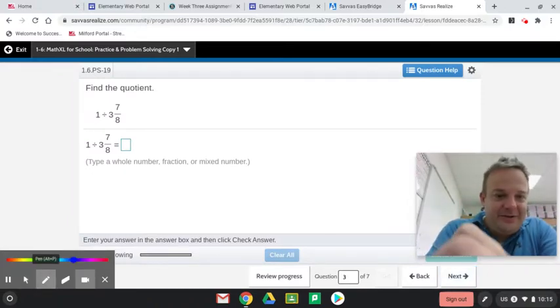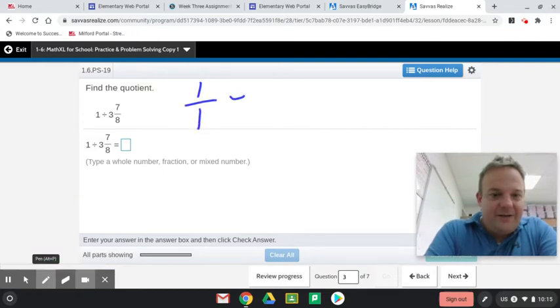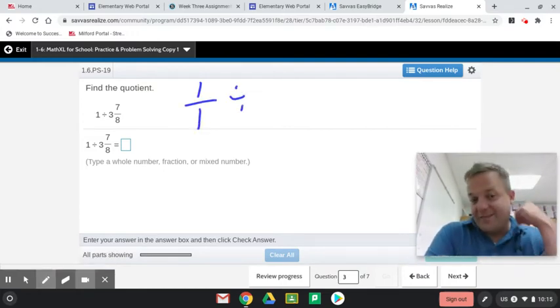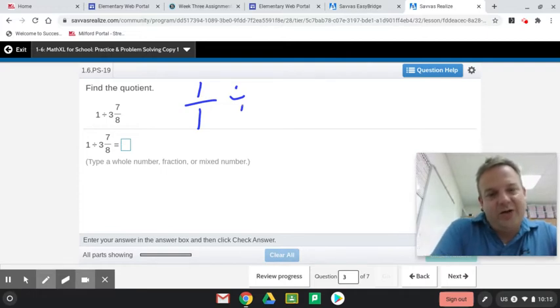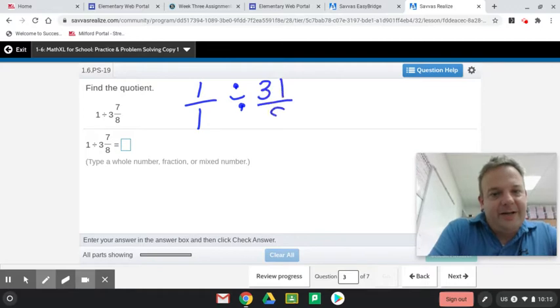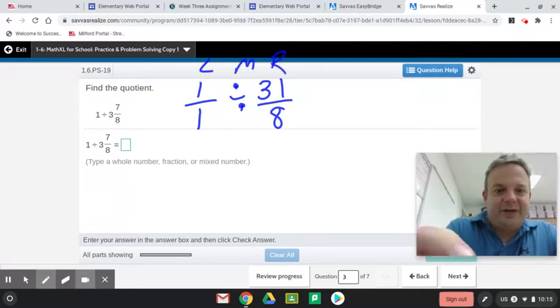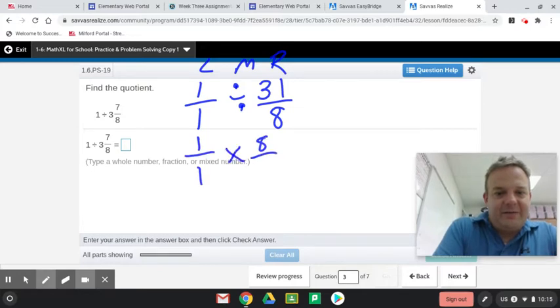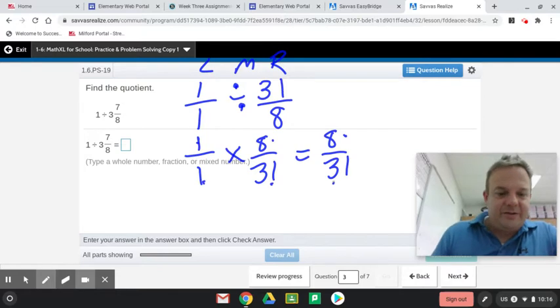Let's do this one. So 1 over 1 divided by, and I'm going to convert that to an improper fraction. 8 times 3 is 24, plus 7. 24 plus 7 is 31. Now, left side leave it, middle multiply, right side reciprocate. And we have 1 over 1 times 8 over 31. That equals 8 over 31. 1 times 8 is 8, 1 times 31 is 31. We'll see if it worked.